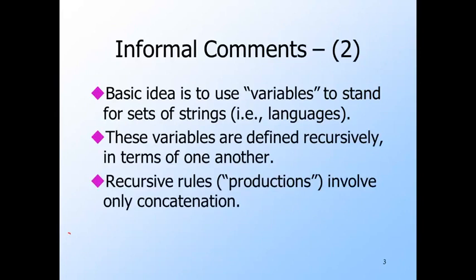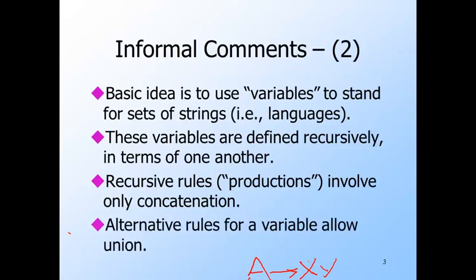Each production has a variable on the left, say A, an arrow, and zero or more symbols on the right, say X and Y, that serve as the definition. A rule like this says that the concatenation of the languages represented by X and Y is a subset of the language represented by A. A variable may have several productions, and its language is thus defined to be the union of the languages described by the right sides of each of its productions. But all of this may be recursive, so grammars are in fact far more powerful than the regular expressions we can build from unions and concatenations.